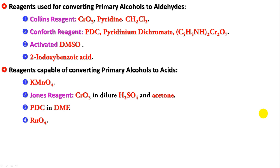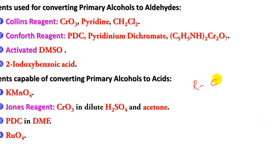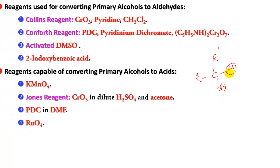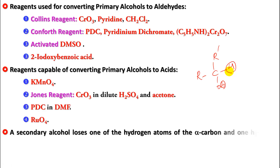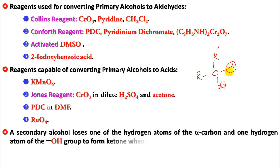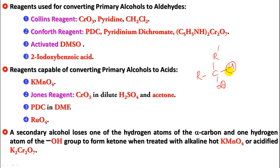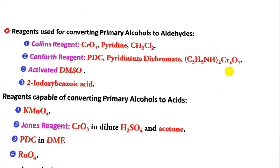For a secondary alcohol, which has two alkyl or aryl groups, oxidation causes the loss of one H from the alpha carbon and gives you a ketone. We use the same set of reagents and get a ketone. The advantage here is that the ketone is not easy to oxidize further, so the reaction automatically stops at the ketone stage.